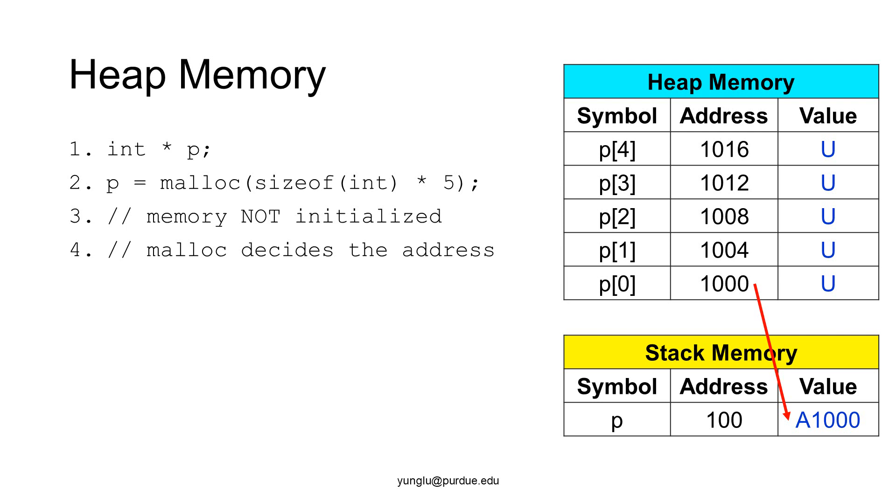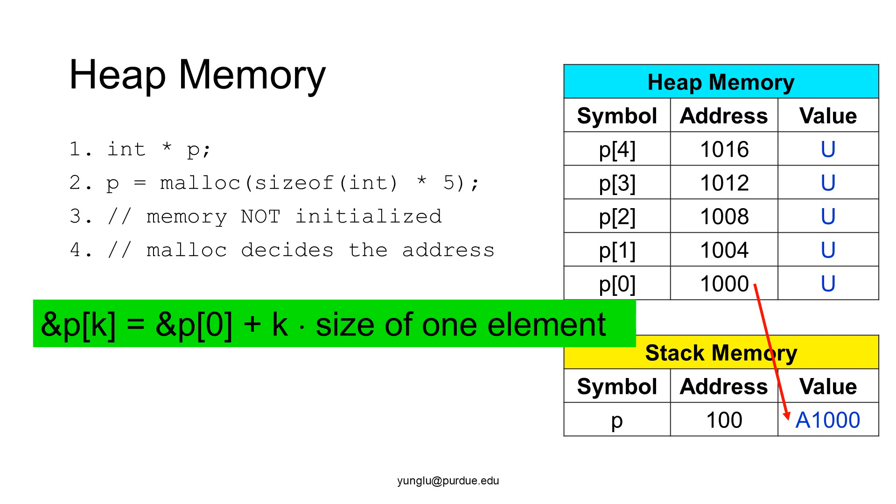The address of the array is determined by malloc. If we run the same program again, it is very likely that malloc will return another address. Because each element is an integer, each element takes four bytes. The following equation about addresses is correct. The address of the element with index k is the address of the element with index zero, plus k multiplied with the size of each element. This equation is always true for any type of array.